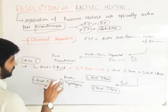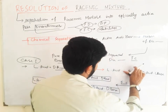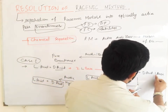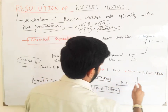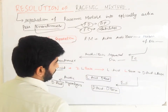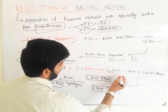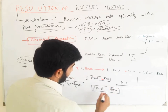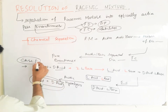Next, if we use levo-base, then we have a mixture of diastereomers: l-acid·l-base and d-acid·l-base. Then we do fractional crystallization, giving us l-acid·l-base and d-acid·l-base as separated diastereomers. Then we do acidic hydrolysis and we get the pure enantiomers. This is case number two.